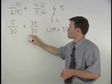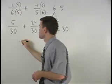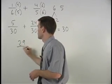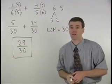Five over 30 plus 24 over 30 is 29 over 30, which is our final answer.